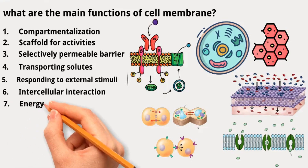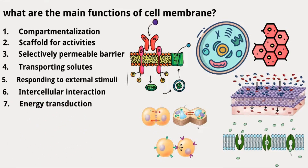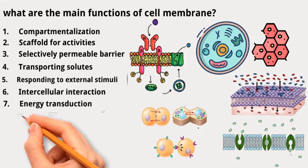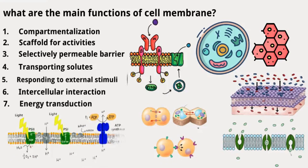Seventh, energy transduction: membranes are involved in converting one type of energy into another. For instance, during photosynthesis, they capture sunlight energy, turn it into chemical energy, and store it in carbohydrates. Membranes are also essential for transferring chemical energy from carbohydrates and fats to ATP, a molecule cells use for energy. This energy conversion process occurs in structures like chloroplasts and mitochondria.